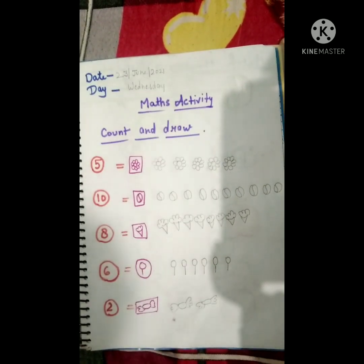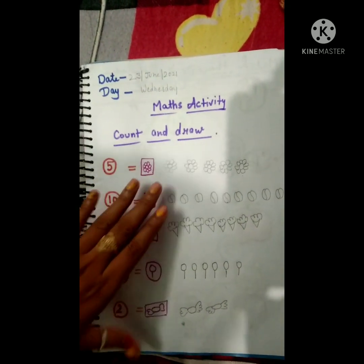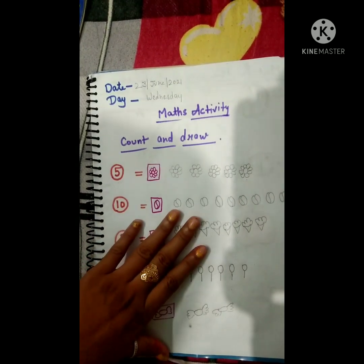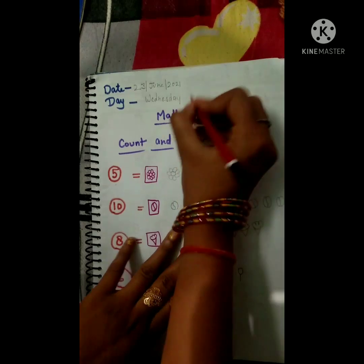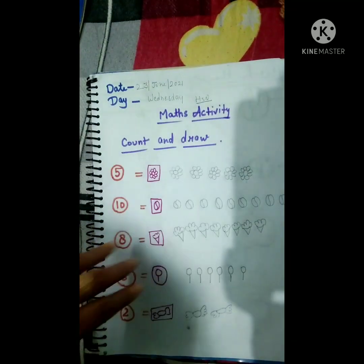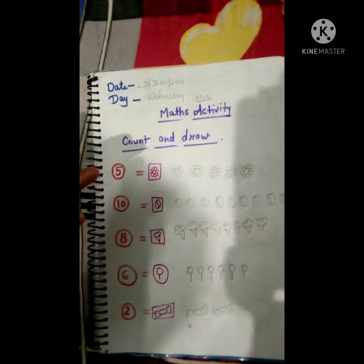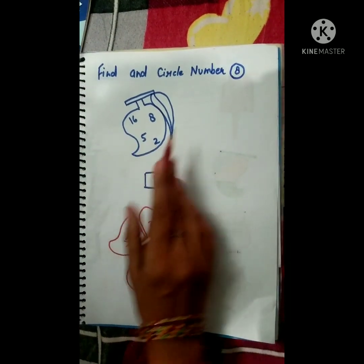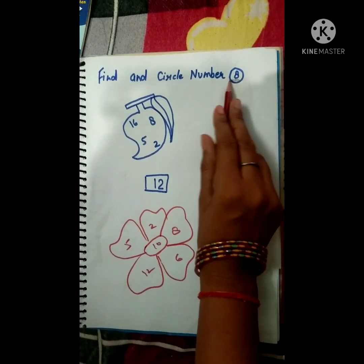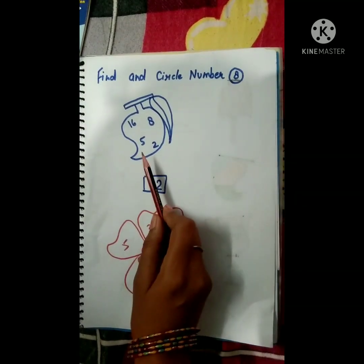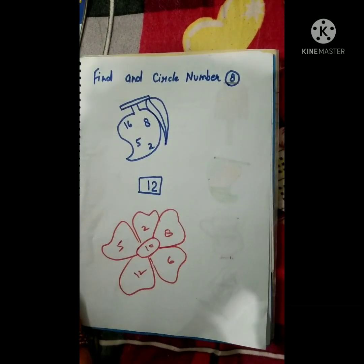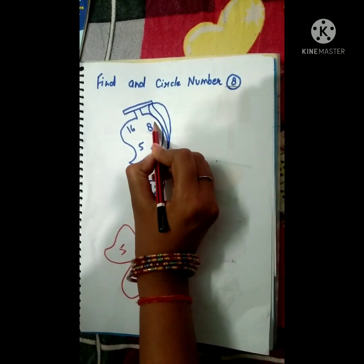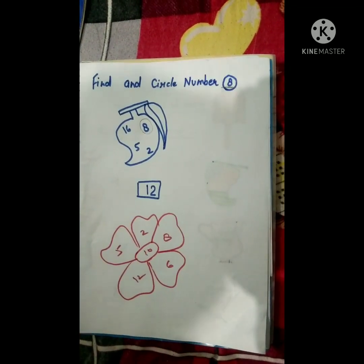This is your homework. Now we will see our next exercise. Find and circle the number. Here we have number 8 — what do we have to do? Find number 8 among the mangoes and circle it.